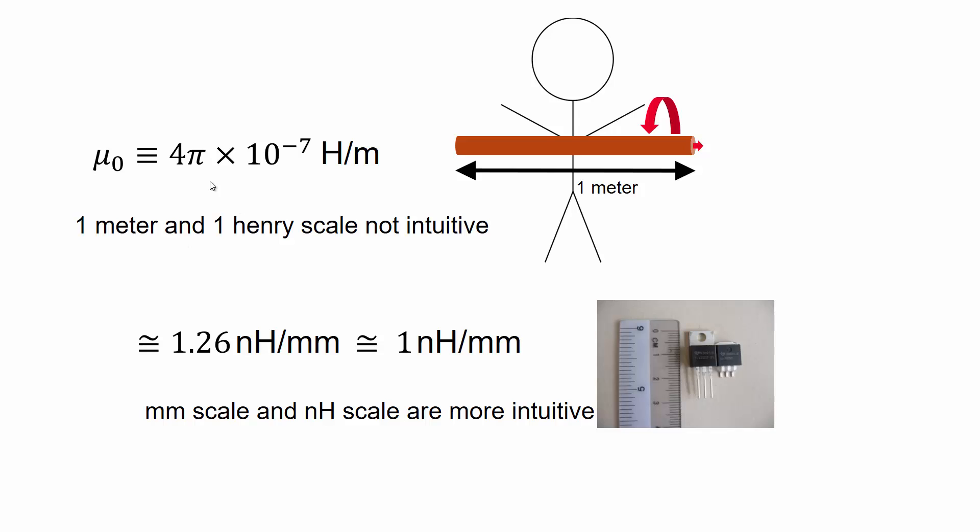A more intuitive way of looking at this μ₀ number is in nanohenries, which is more the kind of value you get in the circuit, and millimeters, which is typically the kind of size of a circuit.